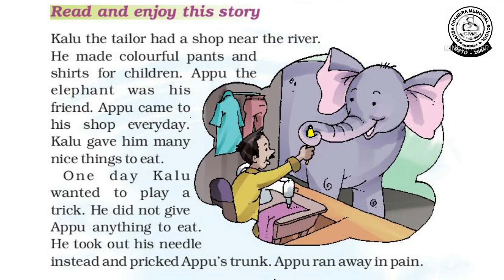So students, who was Kaloo? The tailor's name was Kaloo and the elephant's name was Appu. Every day, Appu used to come to Kaloo's shop and Kaloo gave him many nice things to eat. But one day, Kaloo wanted to play a trick with Appu. What is the meaning of a trick?